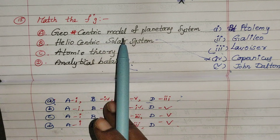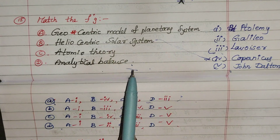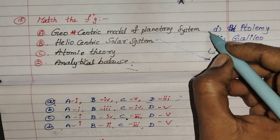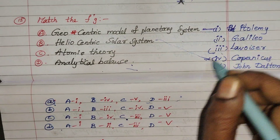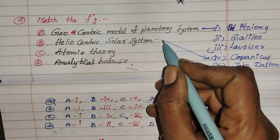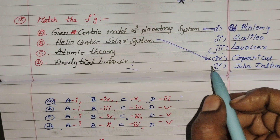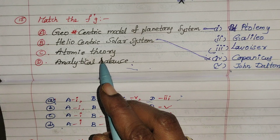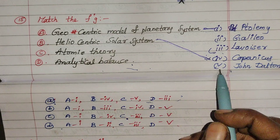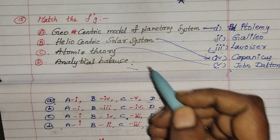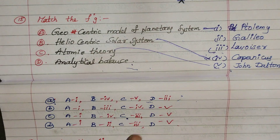The correct option: Geocentric model — Ptolemy is correct. Atomic Theory — John Dalton is D3. The correct option is A. So the correct answer places Ptolemy with geocentric model, John Dalton with atomic theory — correct option A.